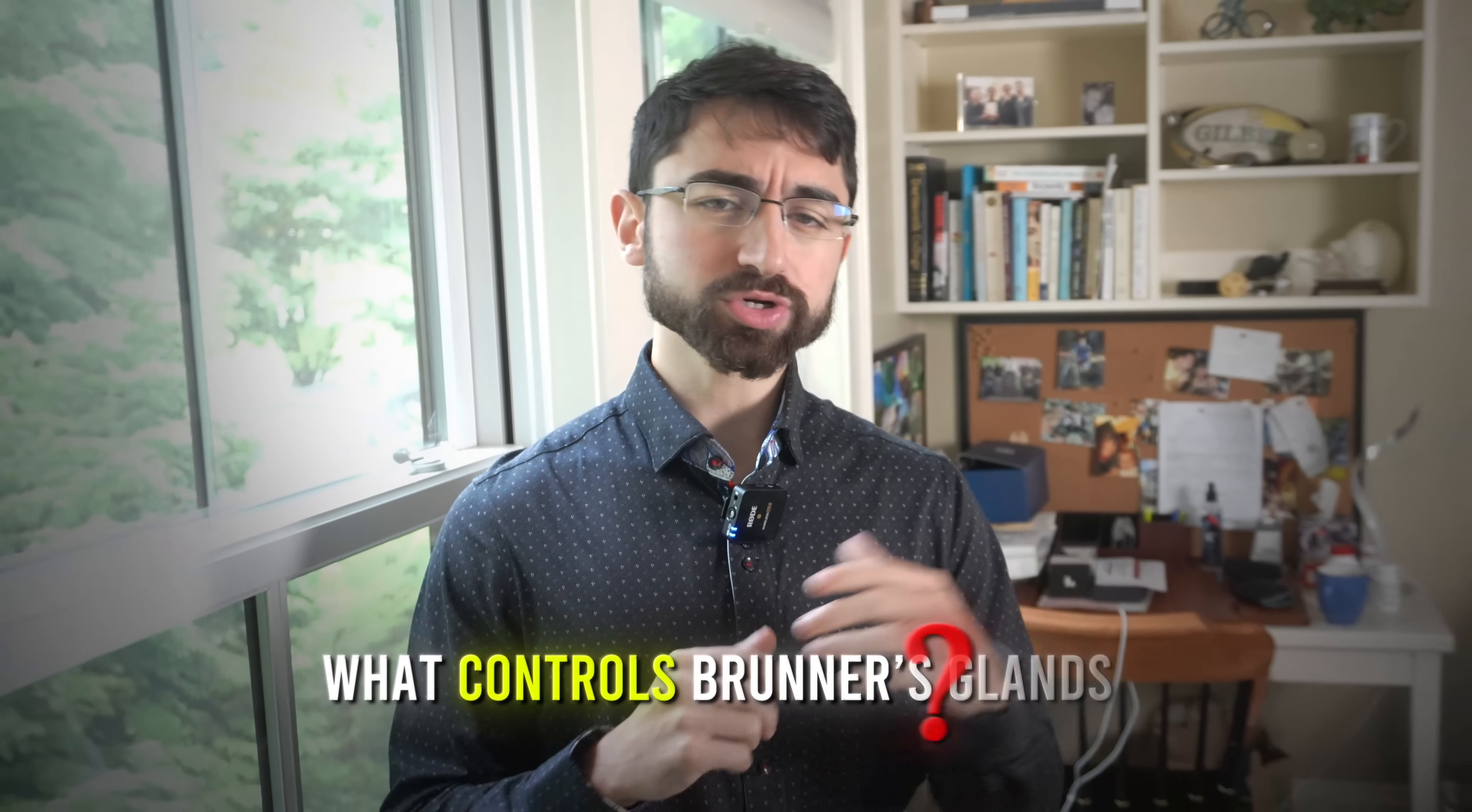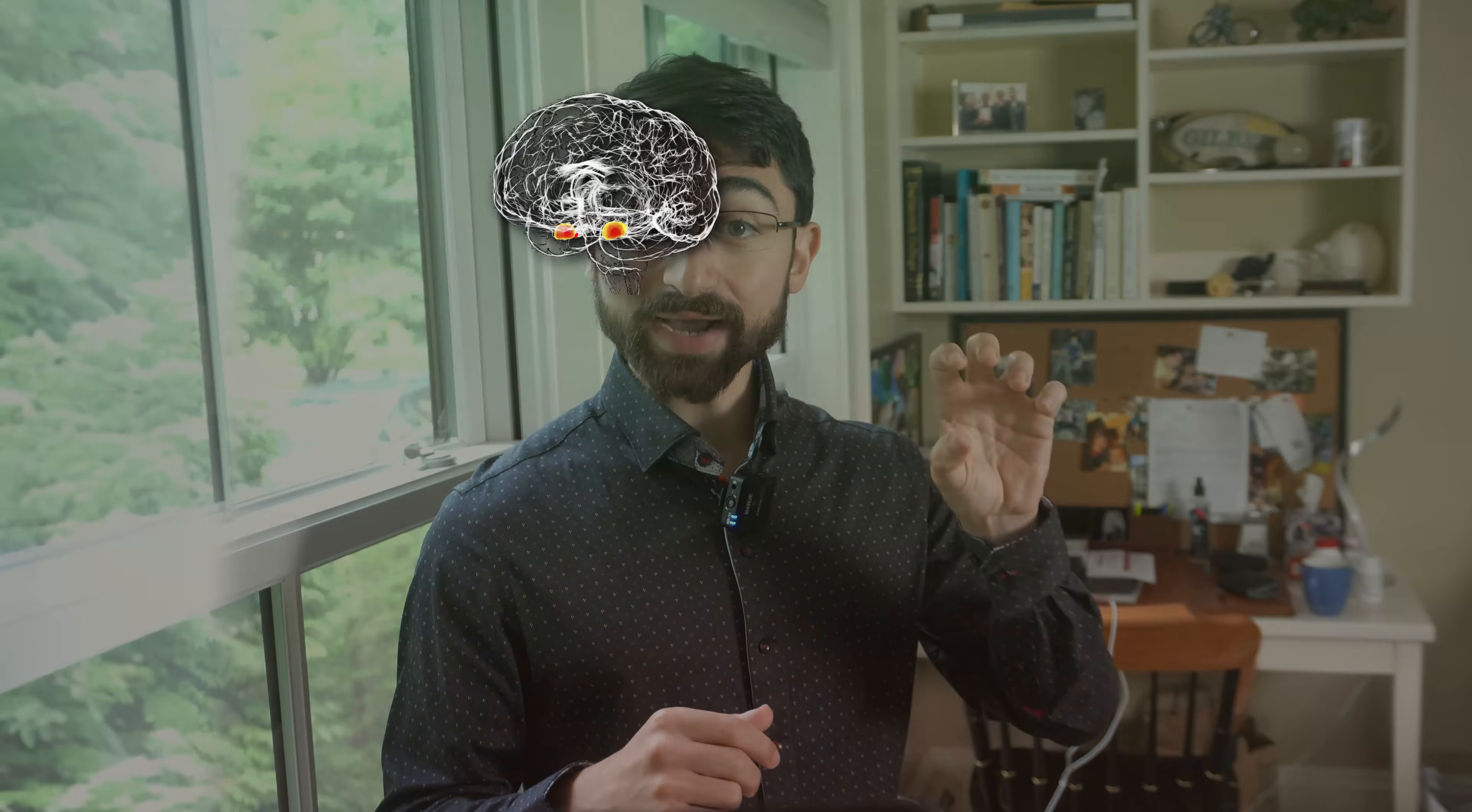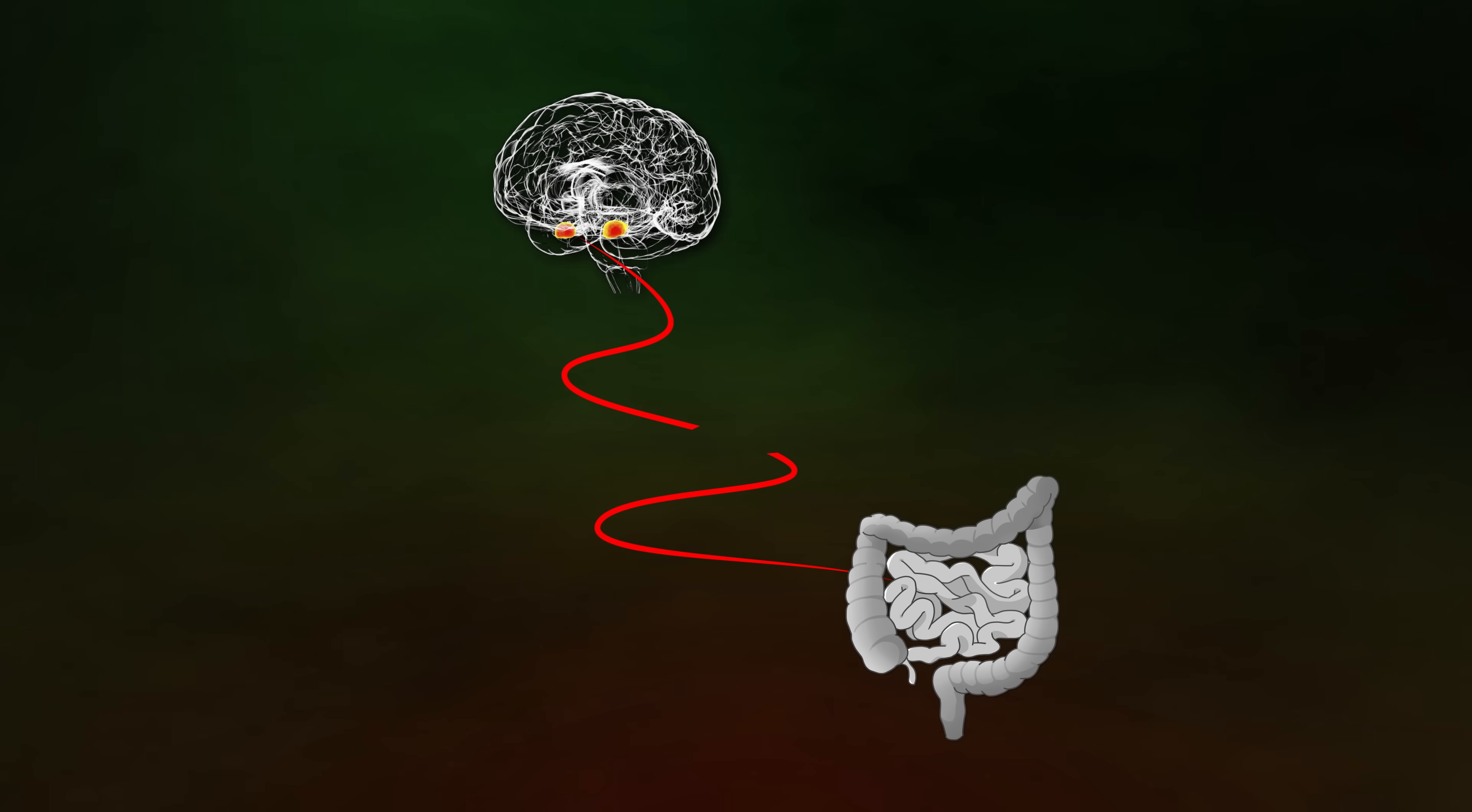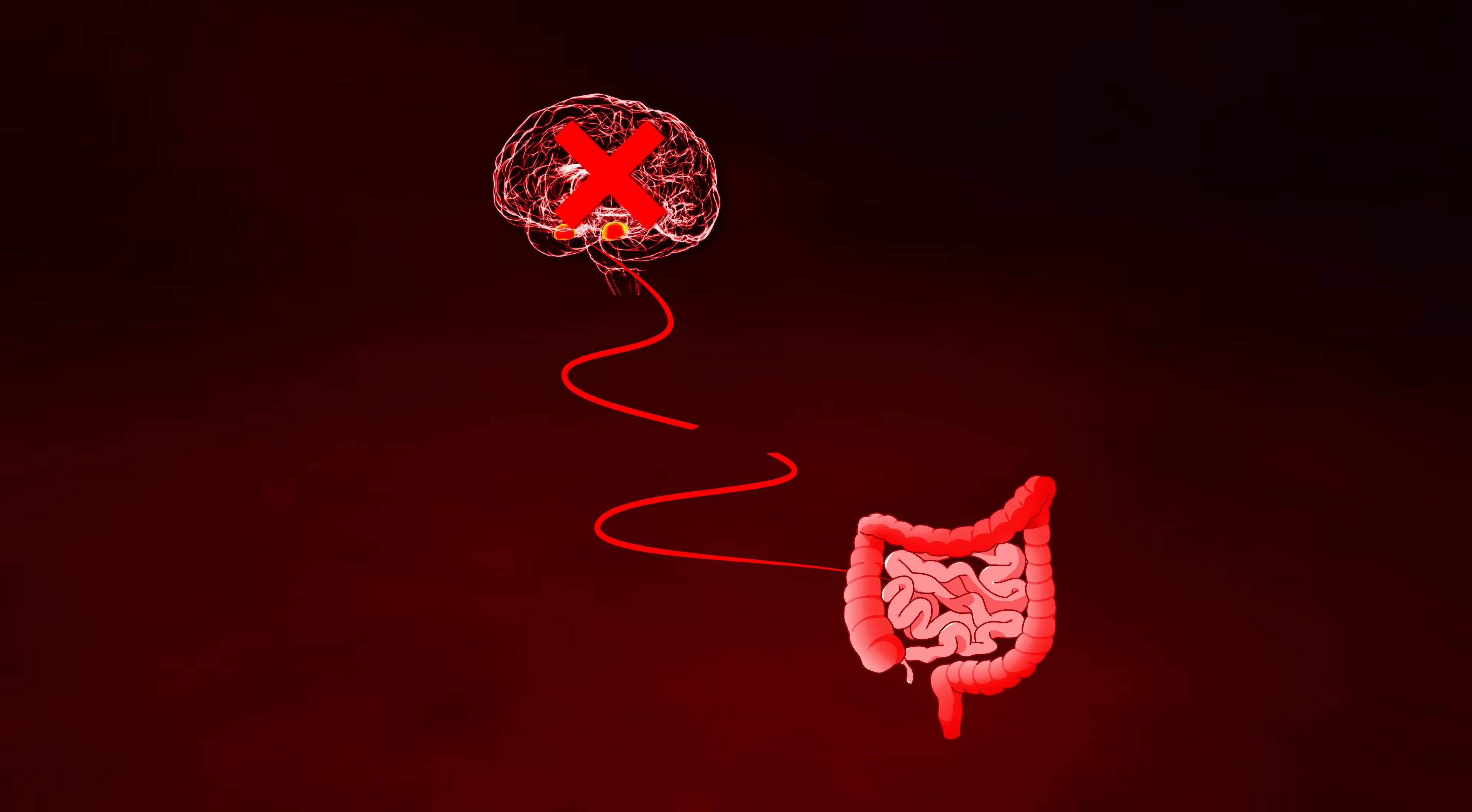But the question, what controls Bruner's glands? Well, they found the vagus nerve directly connects the brain to the gut and specifically connects the brain to Bruner's glands. So if you cut the vagus nerve, the brain can't activate Bruner's glands and Lactobacillus are depleted. So the brain is what's controlling Bruner's glands along with peripheral hormones.